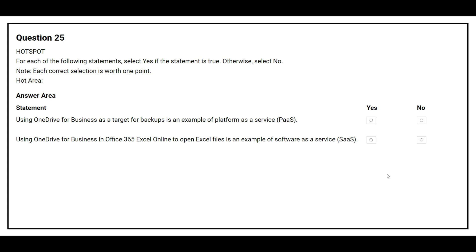Question number 25. For each of the following statements, select yes if the statement is true, otherwise select no. The first statement is: using OneDrive for Business as a target for backups is an example of Platform as a Service. The correct answer is no. The second statement is: using OneDrive for Business in Office 365 Excel Online to open Excel files is an example of Software as a Service. The correct answer is yes.